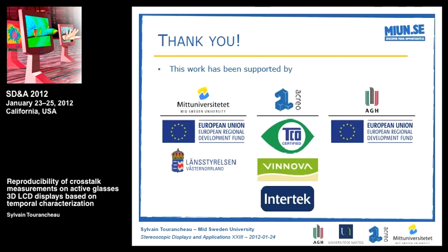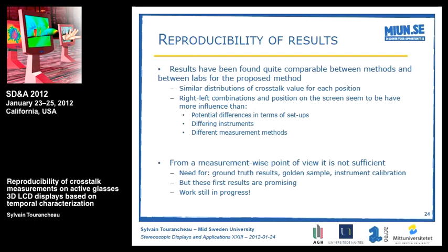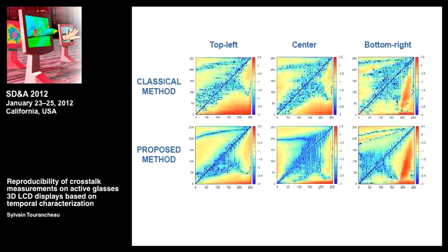A second questioner — Rob Allison, York University — asked about the characteristic paths or lines visible in the cross-talk matrices for certain grayscale transitions, and whether these were due to LCD overdrive. The presenter confirmed this: the cross-talk was computed as an absolute value, but as shown in the prior presentation, there are humps and holes due to overdriving. In one case the luminance is overestimated, in the other it is underestimated, which explains the zero crossing.